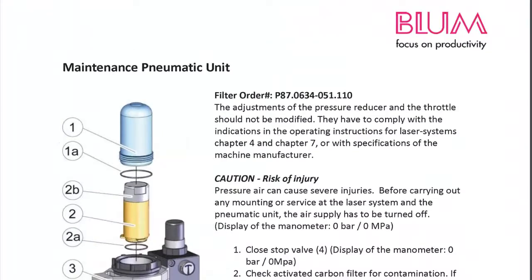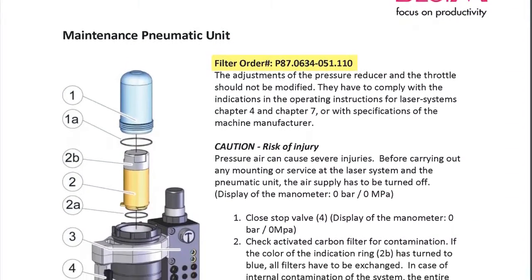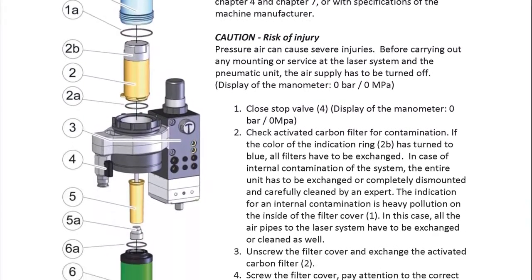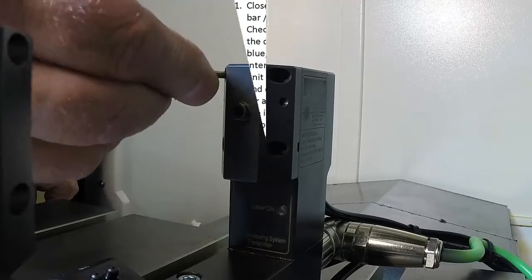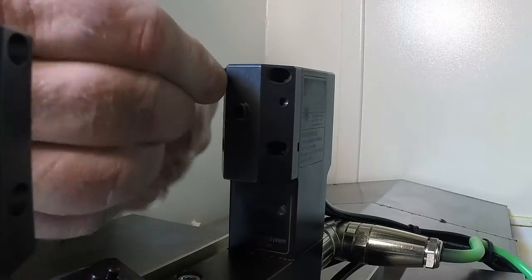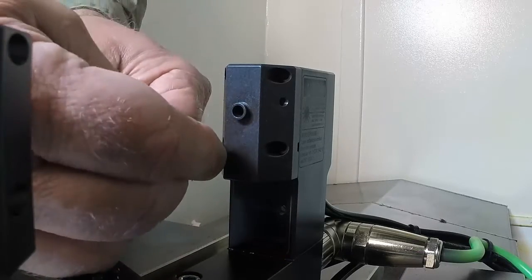If you believe your filters need replaced, you can find a list of maintenance parts in the manual supplied with your system, or simply call your local distributor for part and pricing info. Now remove the lens's pollution protectors by removing the four cap screws from each.